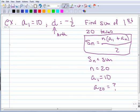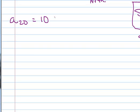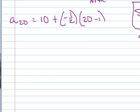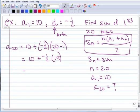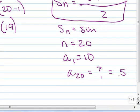So let's use our formula from sequences to find a sub 20. A sub 20 equals a sub 1, which is 10, plus d, which is negative 1 half, times n minus 1, where n is 20, so that's minus 1, giving us 19. So we get 10 plus negative 1 half times 19, which equals 0.5. So a sub 20 is 0.5.